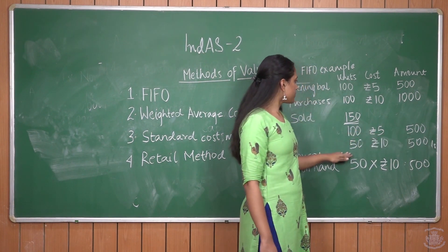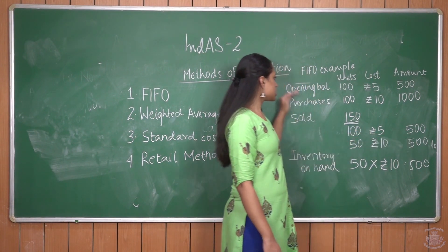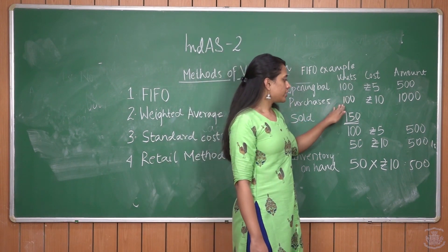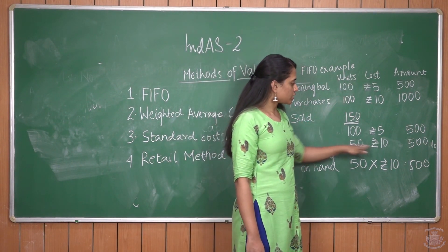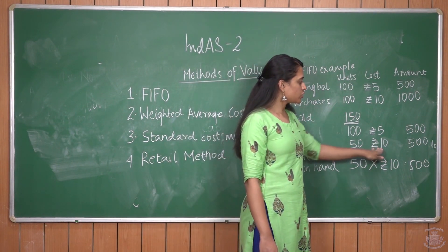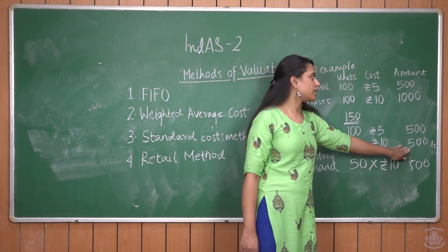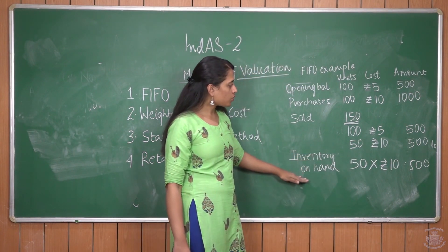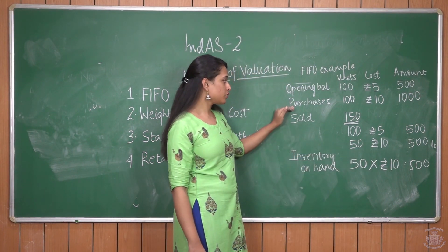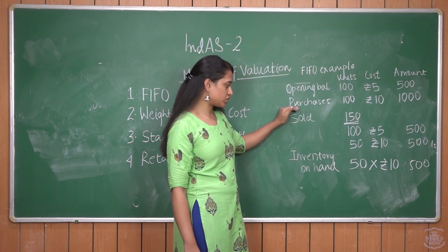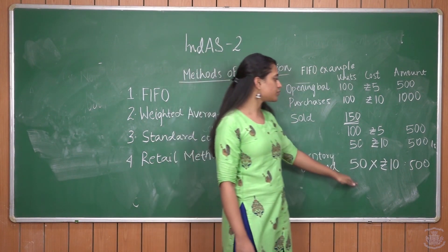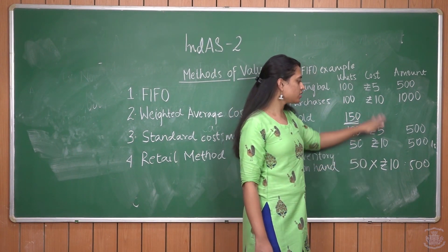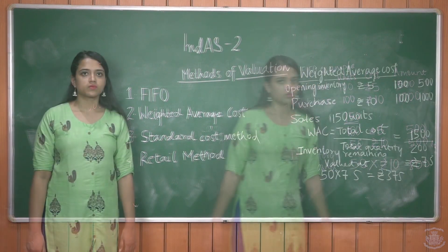For the remaining 50 units sold, they come from the later purchases — 50 units at Rs. 10 = Rs. 500. So the inventory on hand will always be from the later purchases. Hence, 50 units remain, valued at Rs. 10 each, giving a closing inventory of Rs. 500.